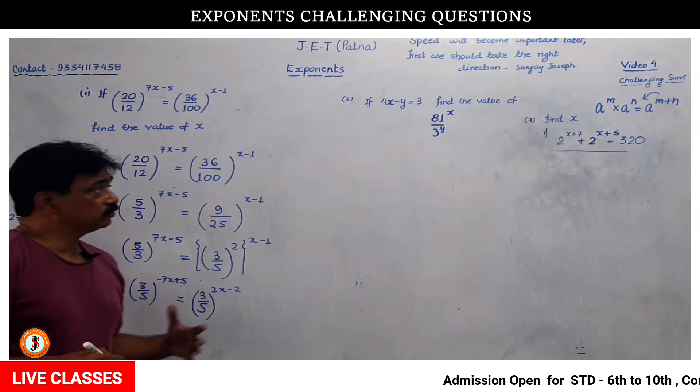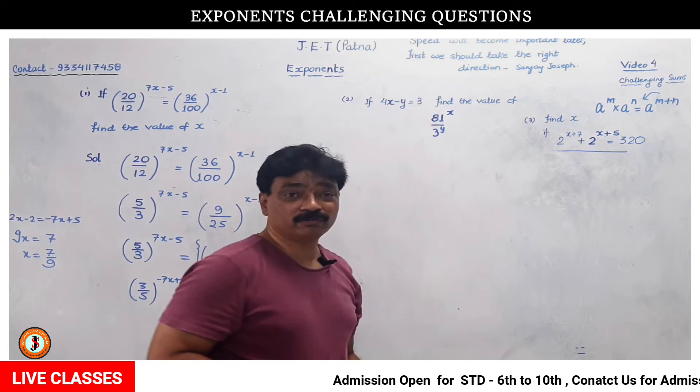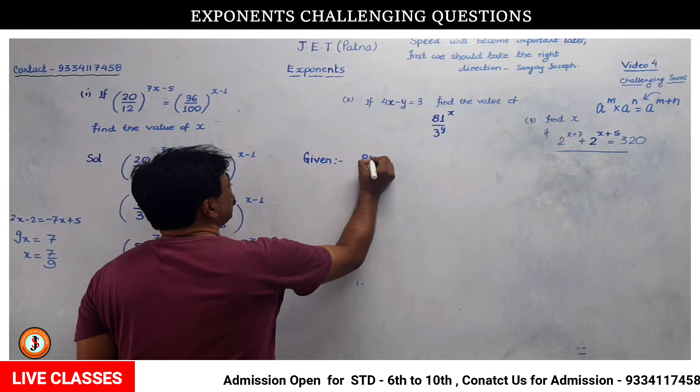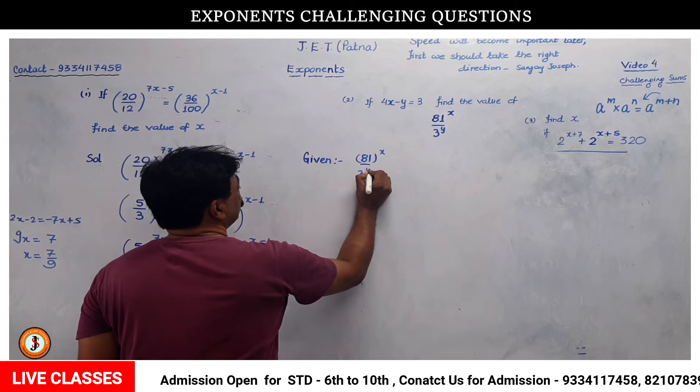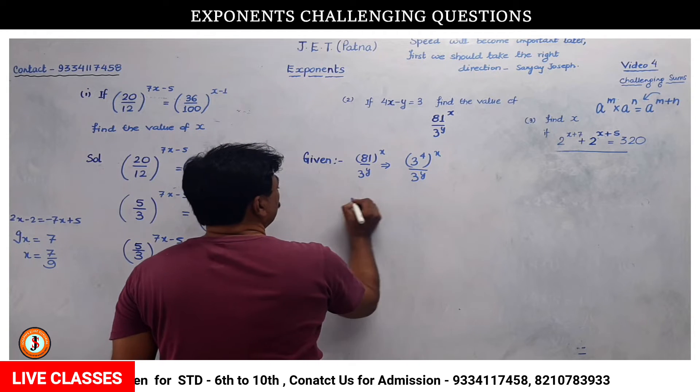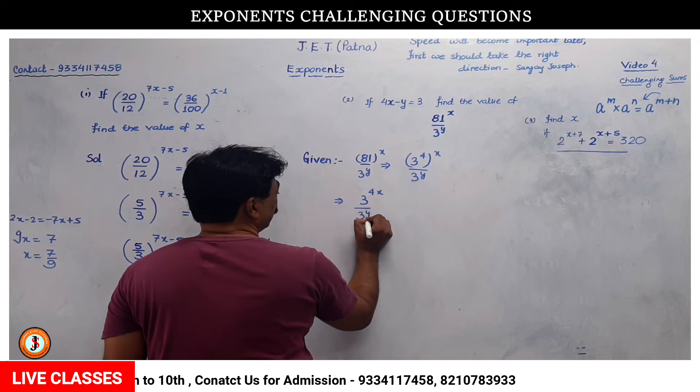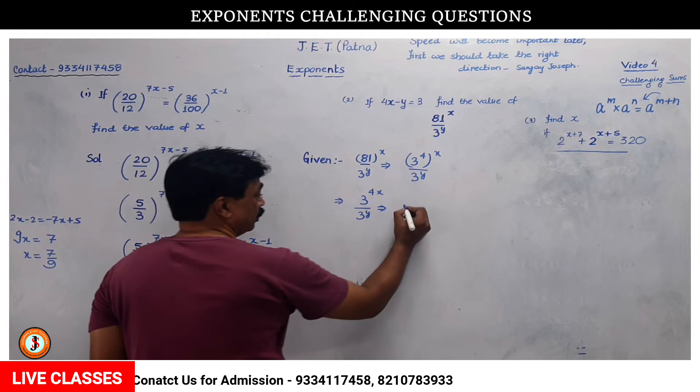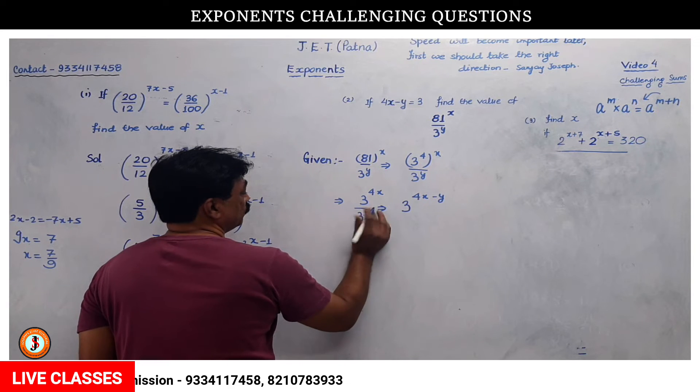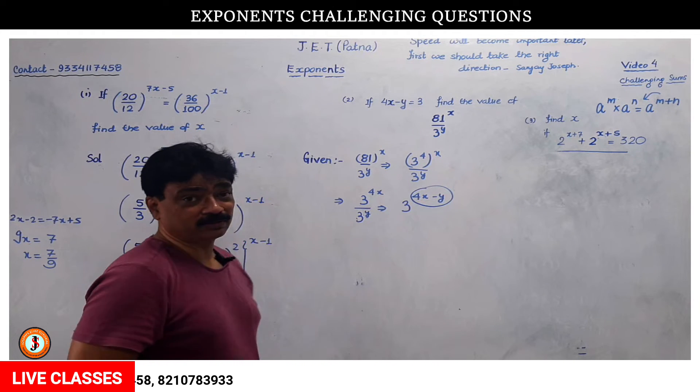So it will be equal to 3 to the power 4 to the power x divided by 3 to the power y. This is 3 to the power of a power, which means multiplication. Divided by 3 to the power 5, so if we get 3 to the power, it will be equal to 3 to the power 4x minus y, because if the bases are the same in division and the powers are the same, we subtract.